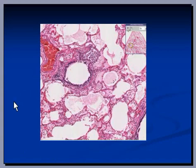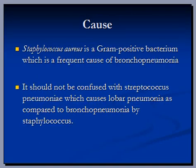So the focus of disease is the bronchial branch and then the infection is spreading into surrounding alveoli here. This is the culprit which is known as Staphylococcus aureus. It is a gram positive bacterium which is a frequent cause of bronchopneumonia. It should not be confused with Streptococcus pneumoniae, which is another bacterium that causes lobar pneumonia, as compared to bronchopneumonia by Staphylococcus.